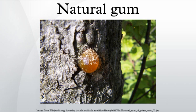Most often these gums are found in the woody elements of plants or in seed coatings. Natural gums can be classified according to their origin, and they can also be classified as uncharged or ionic polymers.